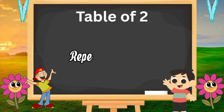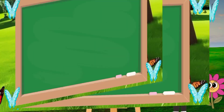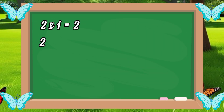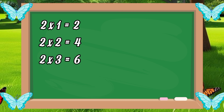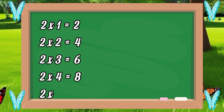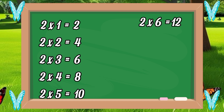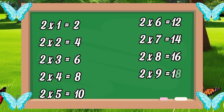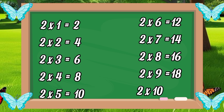Repeat once again. 2×1 = 2, 2×2 = 4, 2×3 = 6, 2×4 = 8, 2×5 = 10, 2×6 = 12, 2×7 = 14, 2×8 = 16, 2×9 = 18, 2×10 = 20.